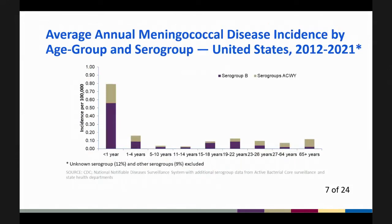This slide shows the proportion of disease by serogroup from 2012 through 2021, predominantly pre-pandemic data. Serogroup B accounted for more than half of cases among adolescents. Note the y-axis scale on this slide differs from the previous slide.